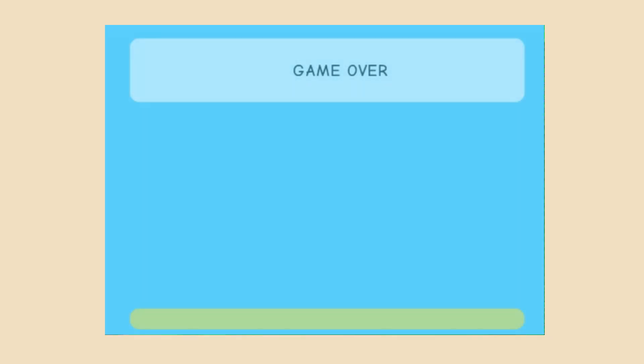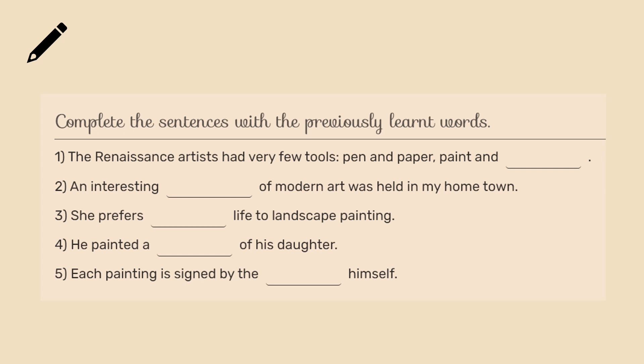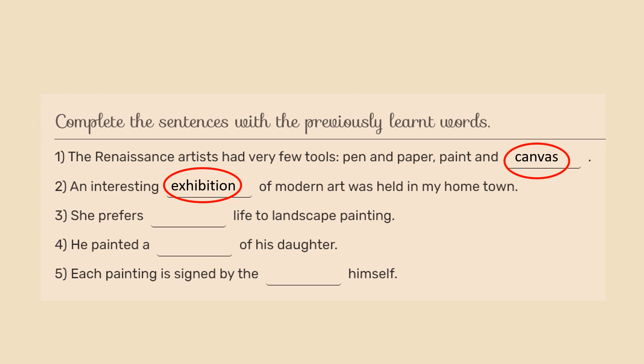Game is over! Well done! Now let's complete the sentences with the words we have just learnt. Stop the video for a moment, copy the sentences and complete them. Let's check your answers now. The Renaissance artists had very few tools — pen and paper, paint and canvas. An interesting exhibition of modern art was held in my hometown. She prefers still life to landscape painting. He painted a portrait of his daughter. Each painting is signed by the artist himself.